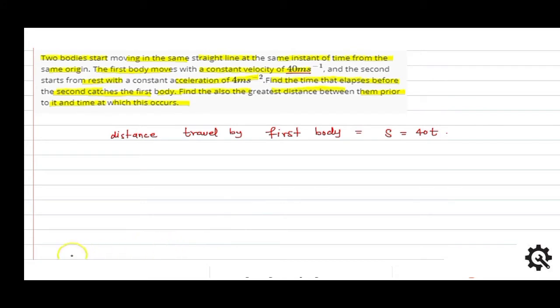Distance traveled by first body in time T is S = VT.